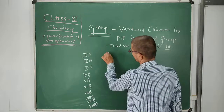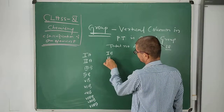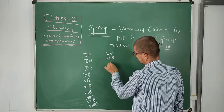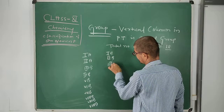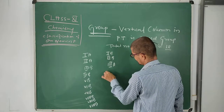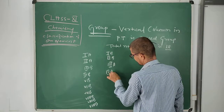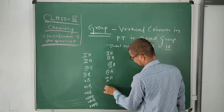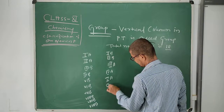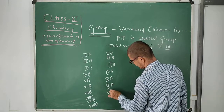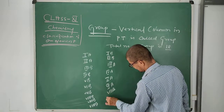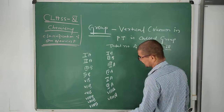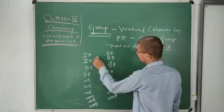Then first B, second B, third A, fourth A, fifth A, sixth A, seventh A, and eighth A. So these are the 18 groups in total.